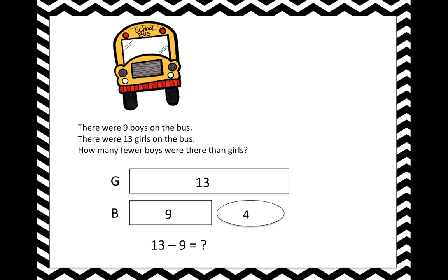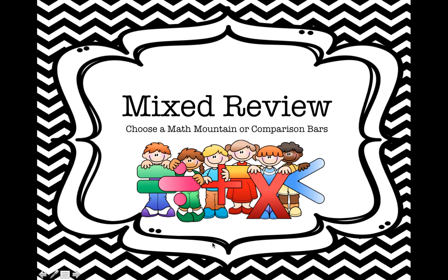I can check my answer by adding these two addends: nine plus four. If it equals 13, then I know I'm correct. Nine plus four does equal 13, so I know that my answer is correct.